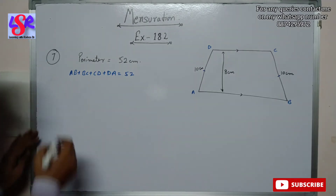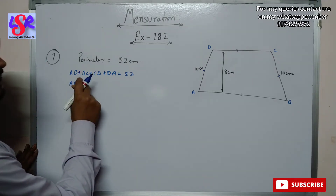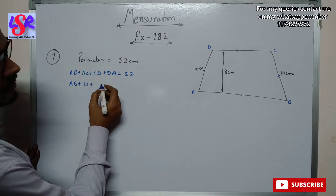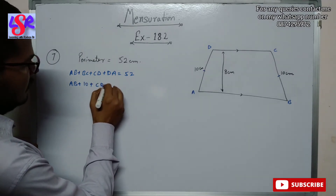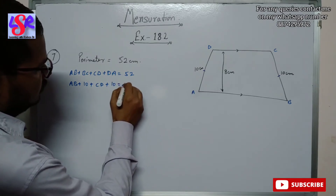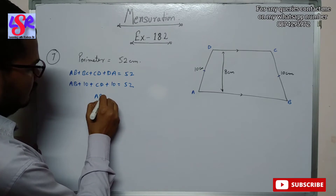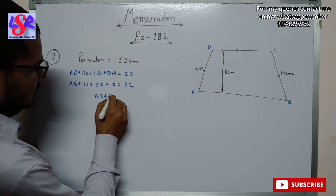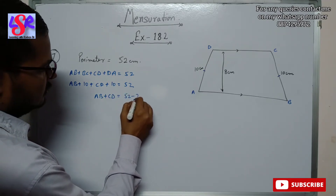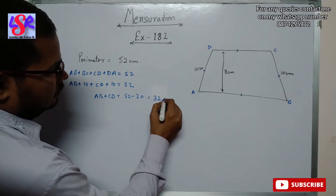Now AB we won't have, so AB + BC = 10 + CD (which we have to calculate) + DA = 10, and that equals 52. So AB + CD equals 52 minus 20, which is 32 centimeters.